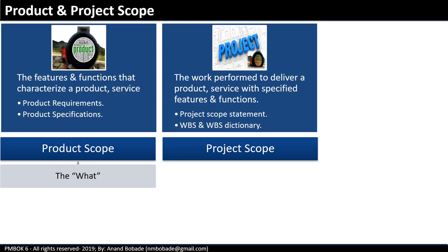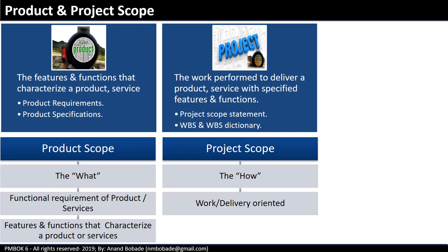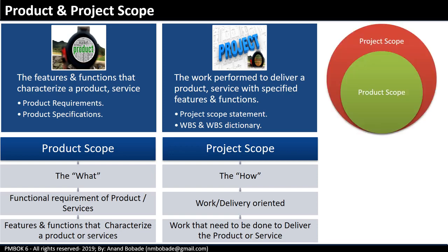Product scope addresses the question 'what' — what the customer wants. It refers to the functional requirements of a product or service, meaning the features and functions that characterize it. Project scope addresses the question 'how' — how the work will be delivered. It is delivery-oriented and helps you as a PM to identify and document the activities or work that need to be done to deliver the product. Remember, product scope is a part of project scope.